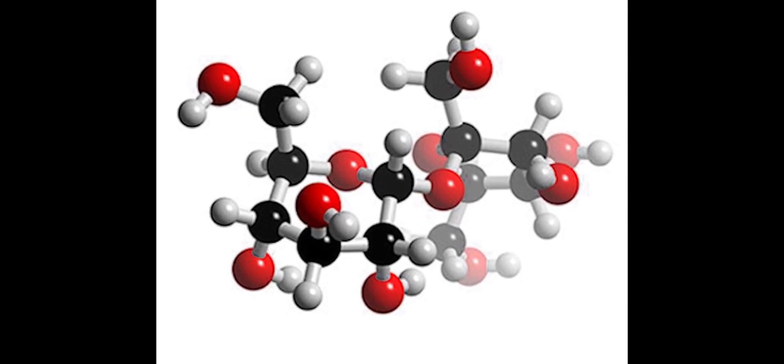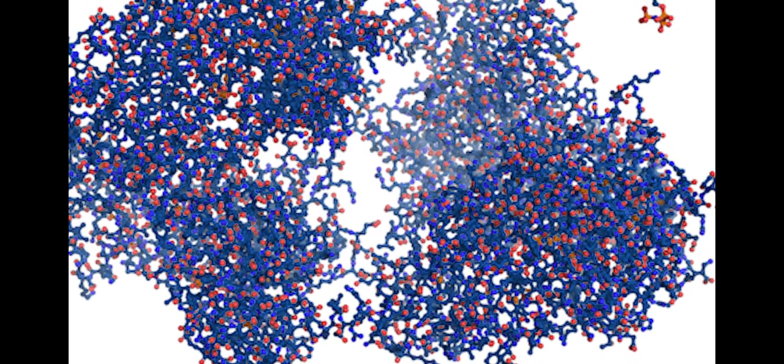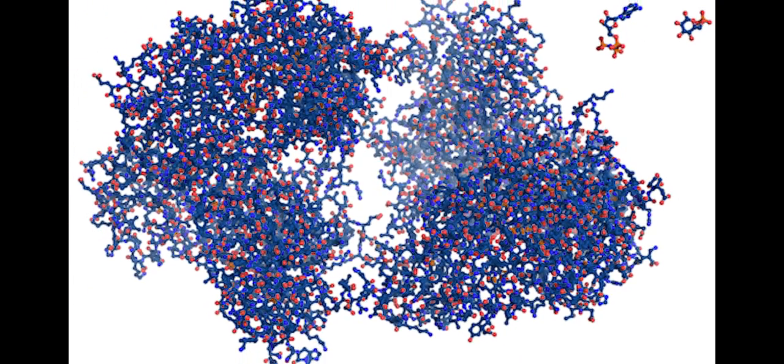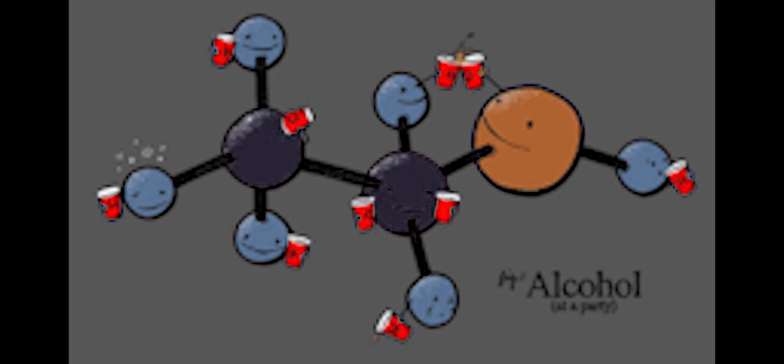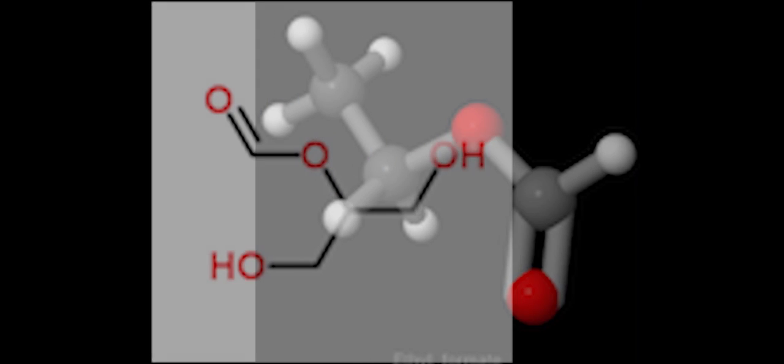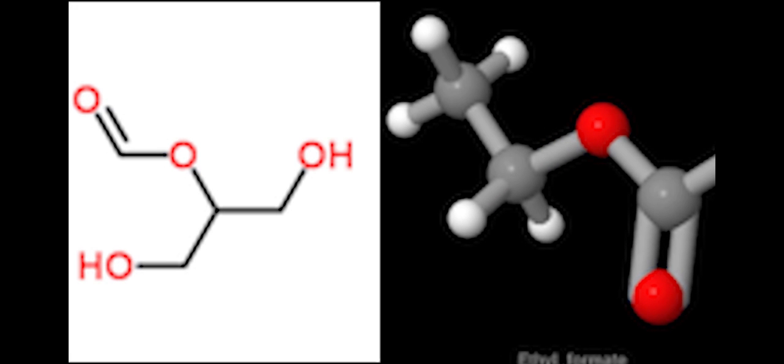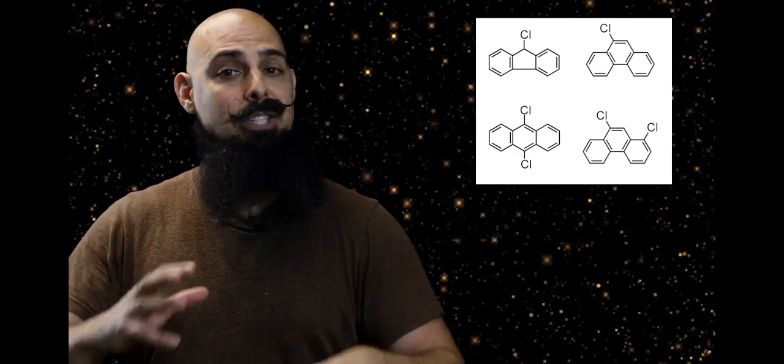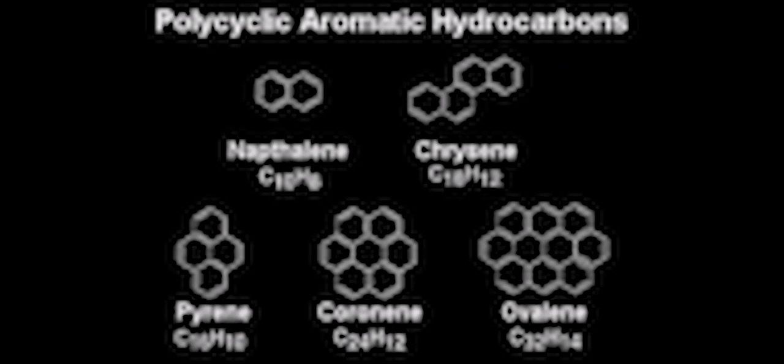What we find are the same organic molecules associated with life here on Earth, including sugars, alcohols, amino acids, ethyl formate, which is the molecule that gives raspberries their characteristic scent, and incredibly complex carbon chains and rings, polycyclic aromatic hydrocarbons, which are the precursor molecules to many carbon-based compounds.